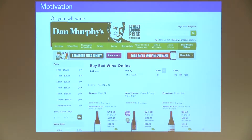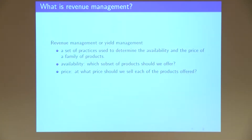In this case, this particular store has chosen 742 items, and they also need to decide the prices and the locations on the website. So in general, in revenue management, we can think about this as a practice where you need to decide the availability of products and also at what price to put them in order for consumers to buy them.